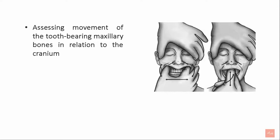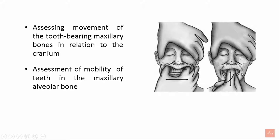This picture shows the assessment of the movement of the tooth-bearing maxilla bone in relation to the cranium, where the left hand is placed over the forehead and the right hand is used to move the fractured segment. Assessment of mobility of the teeth in the maxillary alveolar bone is also checked.